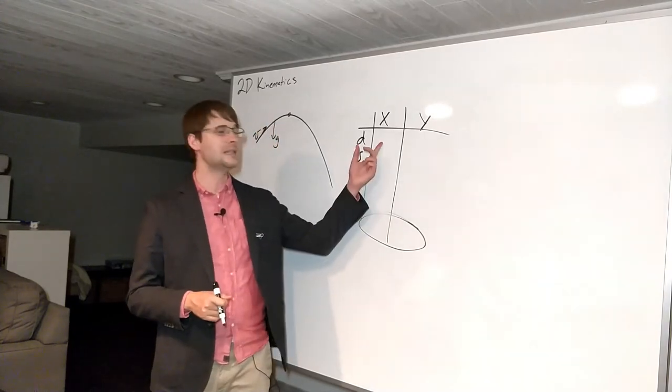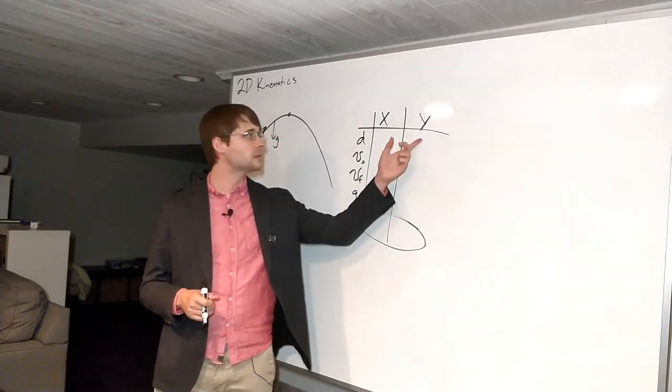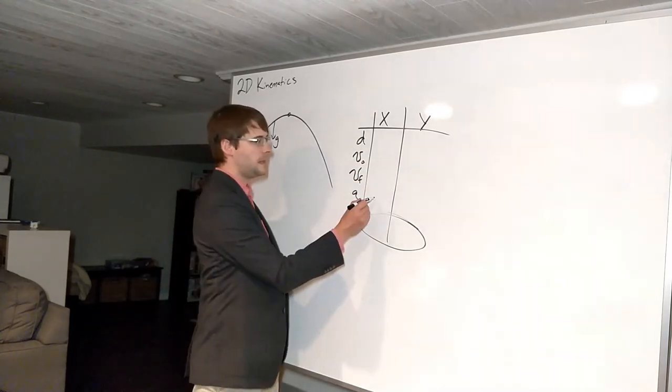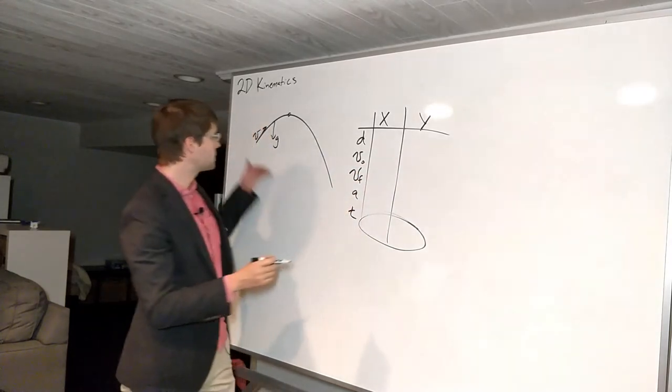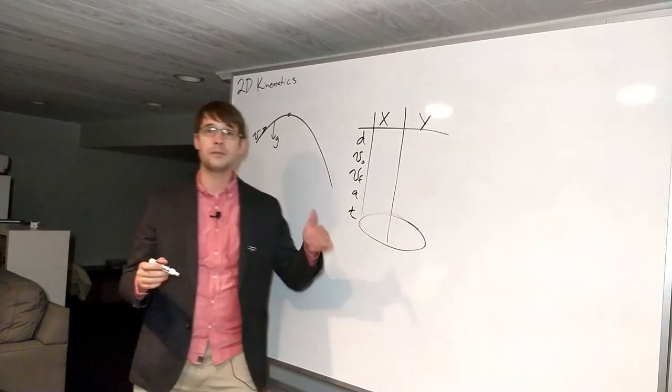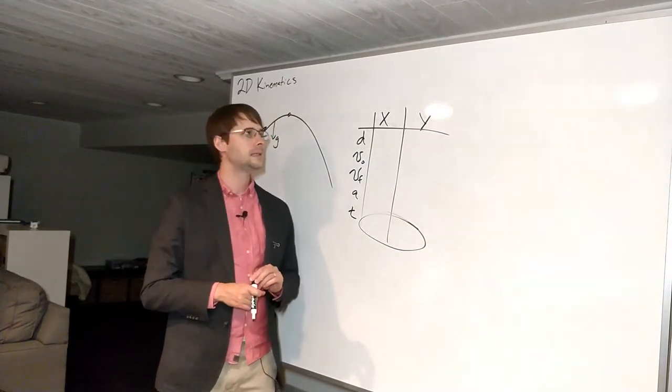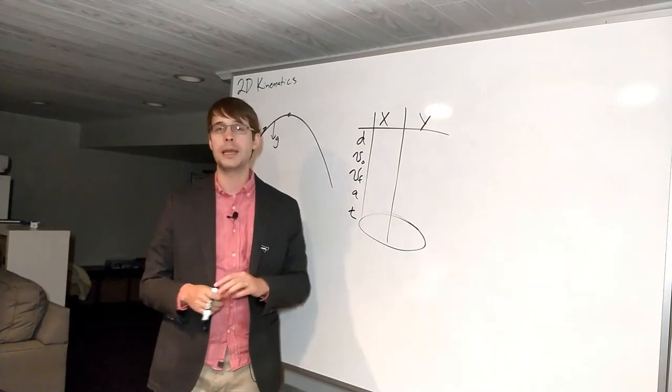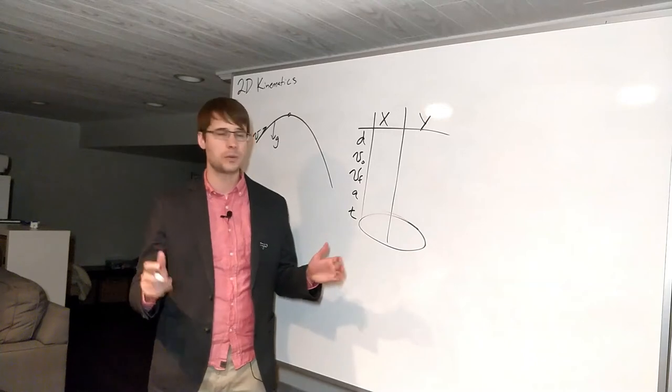So to start off with, this would be the distance or displacement in the x direction, displacement in the y direction, the initial velocities in each direction. The thing about this to remember is in the horizontal direction, something that's in free-fall, a projectile in this case, is something that has only acceleration straight down 9.8 meters per second squared, no acceleration horizontally.